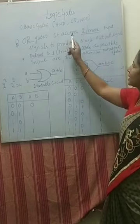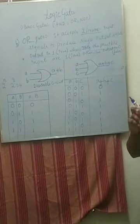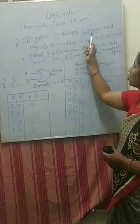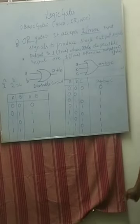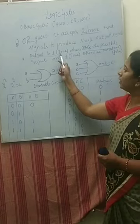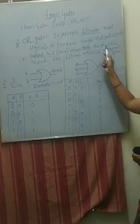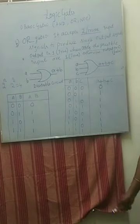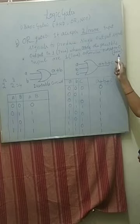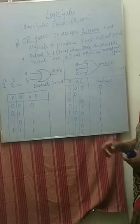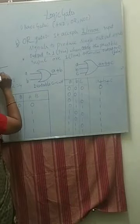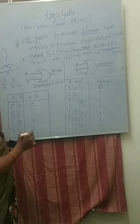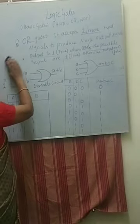The OR gate is a basic gate that performs logical addition. It accepts two or more input signals to produce a single output. Output is 1 when one of the possible inputs is 1; otherwise the output is 0 (false) when all inputs are 0. Please draw the circuit diagram as a curve — do not draw it as a sharp shape.